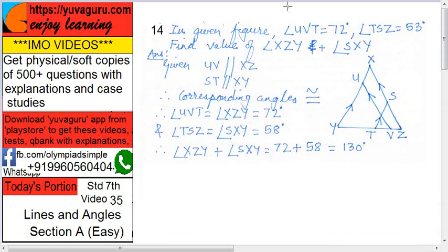In the given figure, see this figure. Angle UVT, this angle equals to 72 degrees. TSZ equals to 53 degrees. Find the value of XZY plus SXY. We have to find the total of these two angles, this angle and this angle.